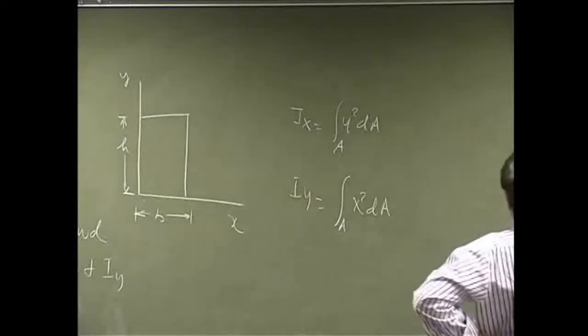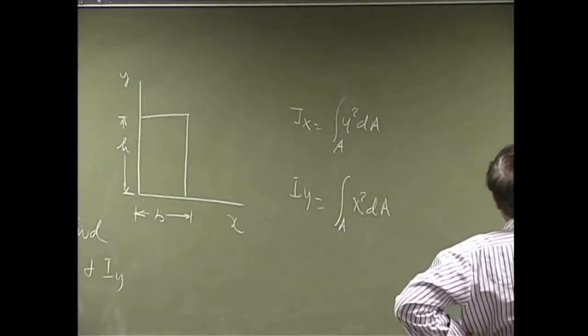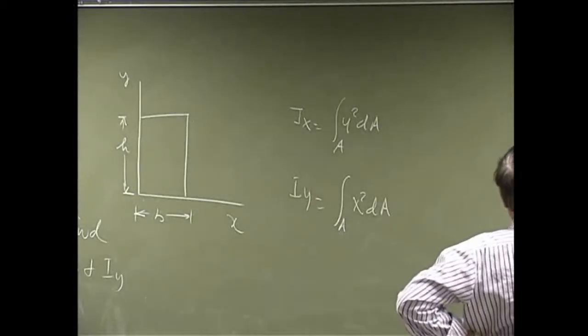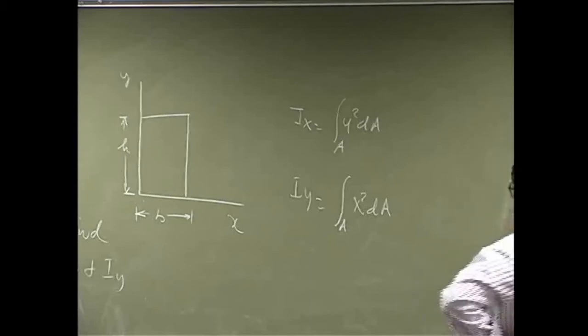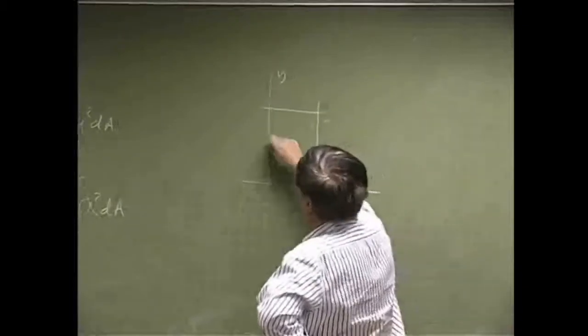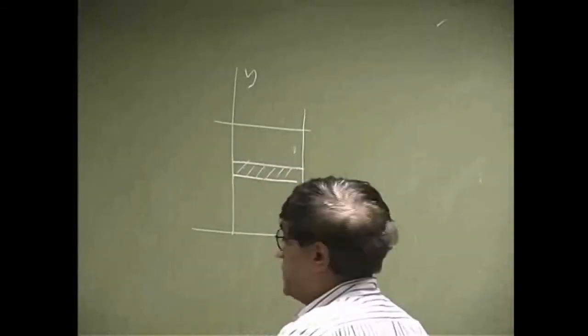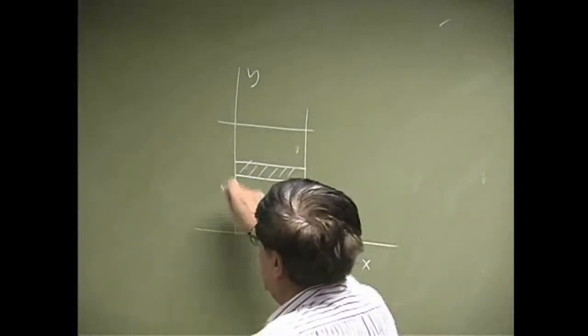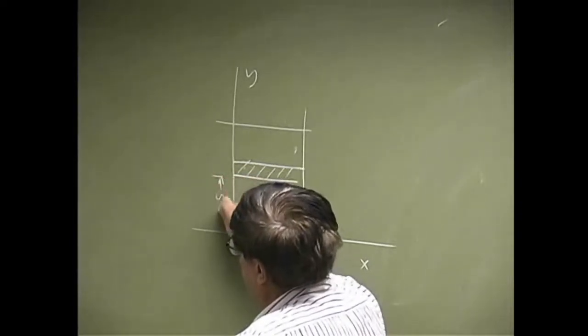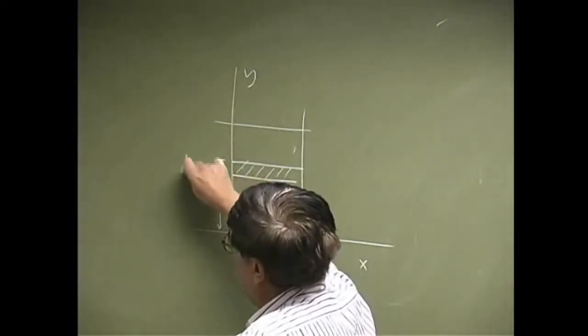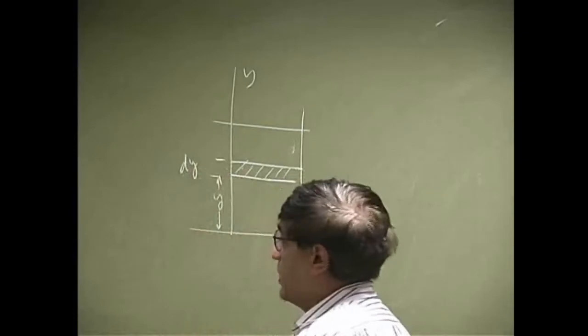So, for the first one, this is x, this is y. You need a rectangular area. It should be parallel to the x-axis, plus this distance is y. It has a thickness of dy.